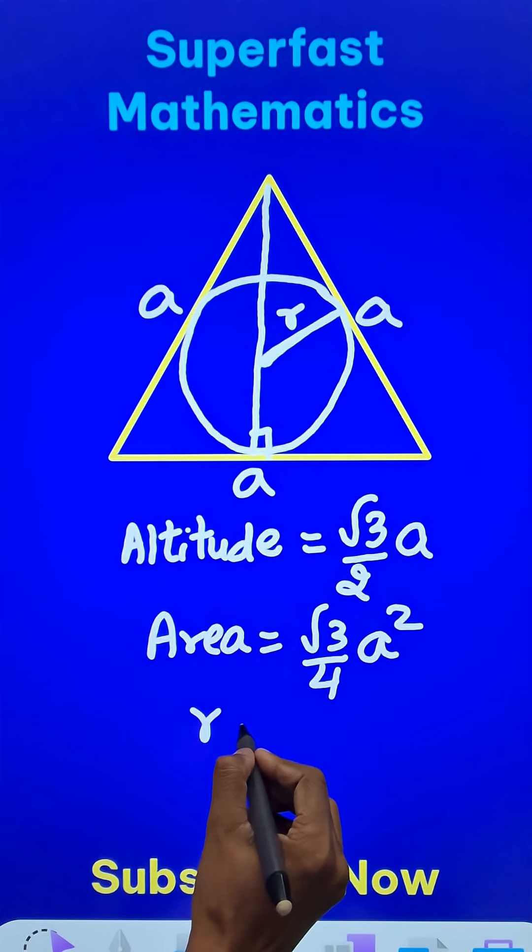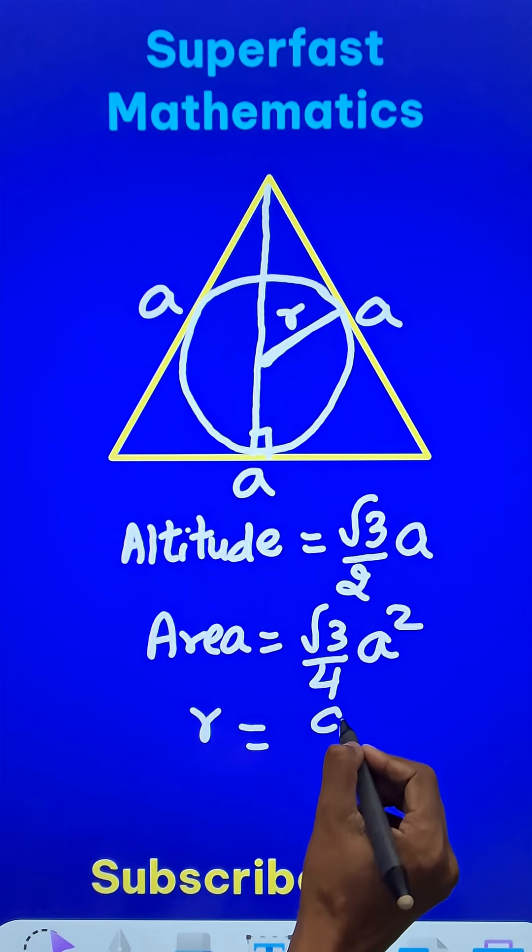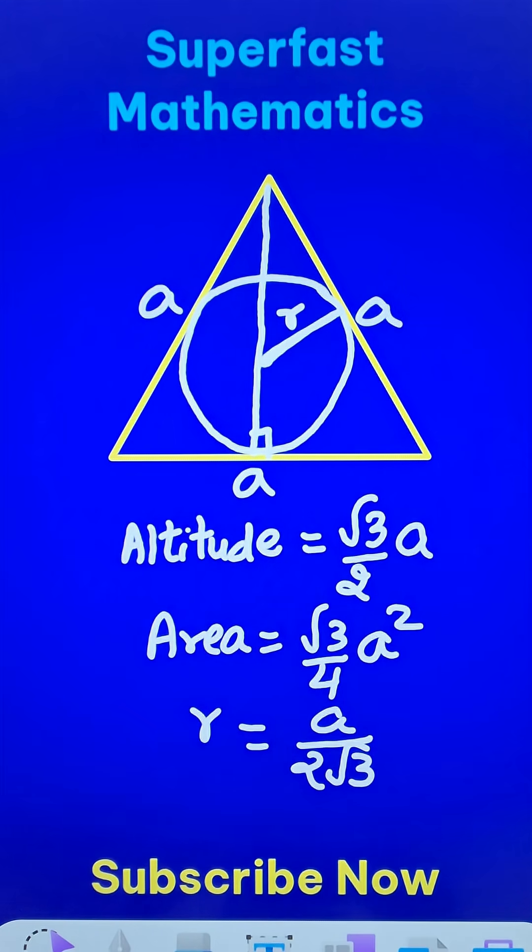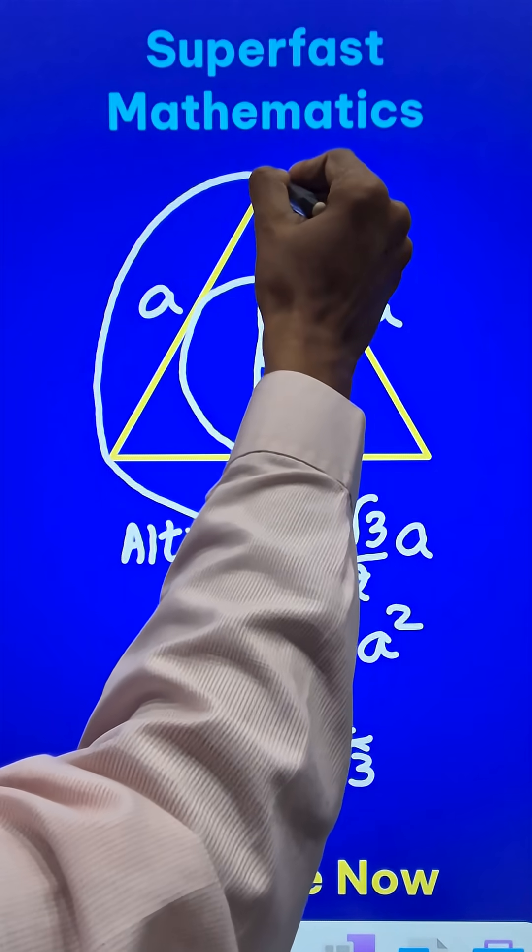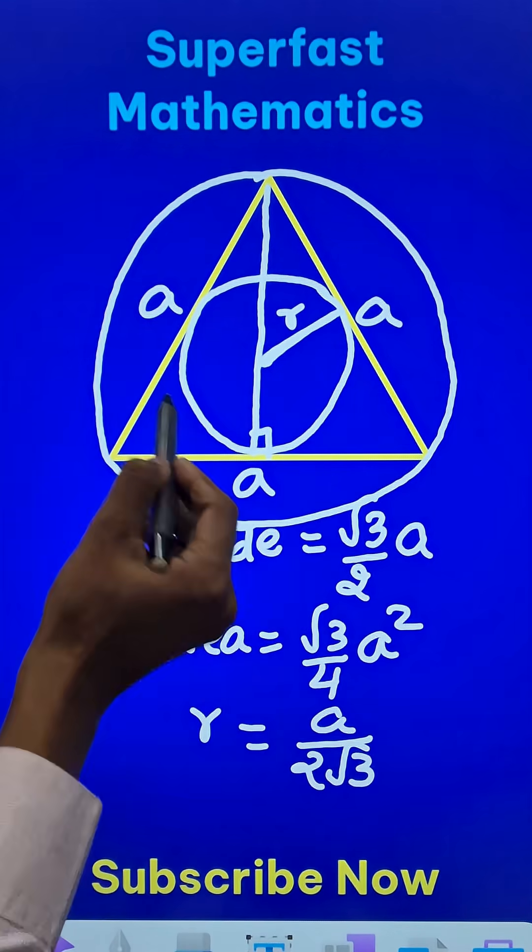This small r is given by the side a divided by 2√3. And similarly, we have the concept of the circumcircle, that means a circle which is drawn like this which touches all the vertices—circumcircle.